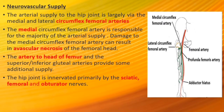Neurovascular supply. The arterial supply to the hip joint is largely via the medial and lateral circumflex femoral arteries, branches of the profunda femoris artery. They anastomose at the base of the femoral neck to form a ring, from which smaller arteries arise to supply the hip joint. The medial circumflex femoral artery is responsible for the majority of the arterial supply, and damage to it can result in avascular necrosis of the femoral head. The hip joint is innervated primarily by the sciatic, femoral and obturator nerves — the same nerves that innervate the knee, explaining referred pain between the hip and knee.